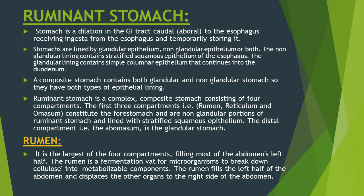Rumen, reticulum, and omasum of the ruminant stomach are the non-glandular portions, lined with stratified squamous epithelium. The last part, the abomasum, is the only glandular portion of the ruminant stomach. So out of the four compartments, only abomasum secretes glandular secretions.